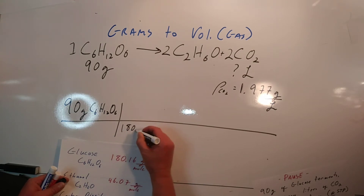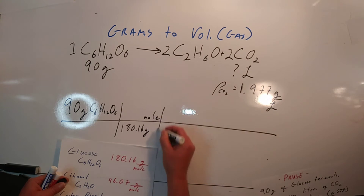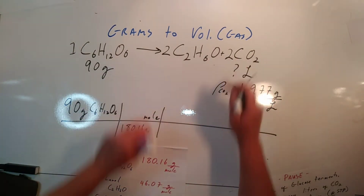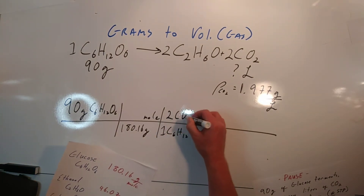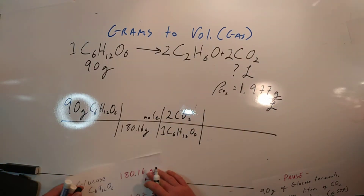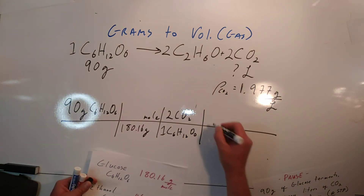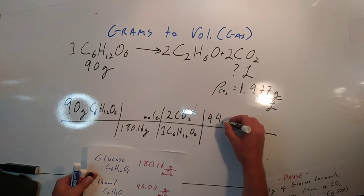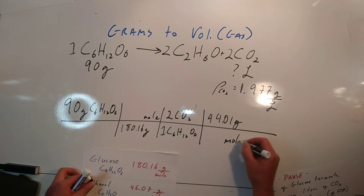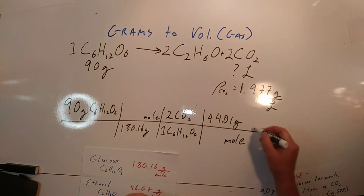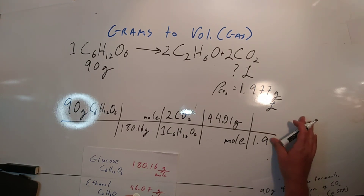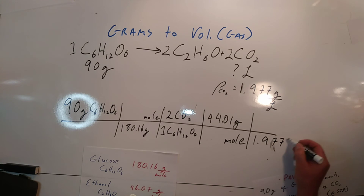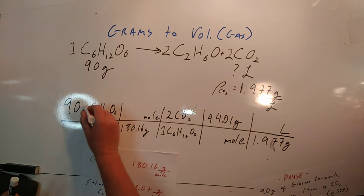We use the balanced chemical reaction, and then again we use the periodic table to determine the molar mass. In the very last step, we can use the density of CO2 to make the final grams cancel.